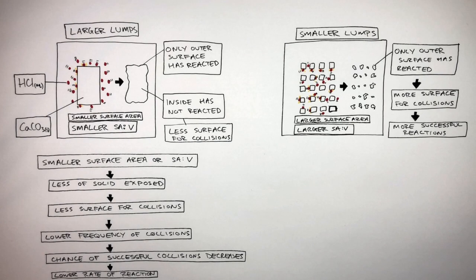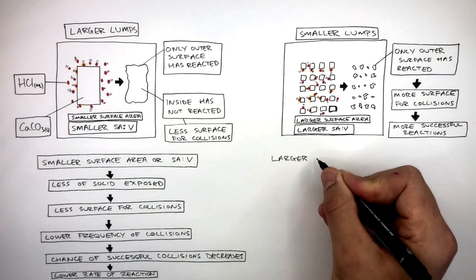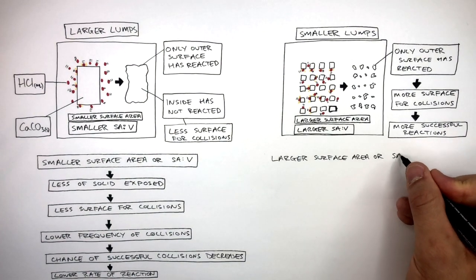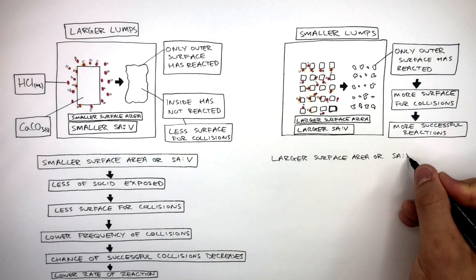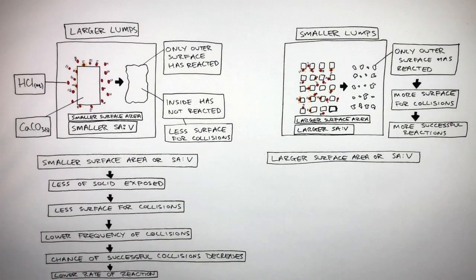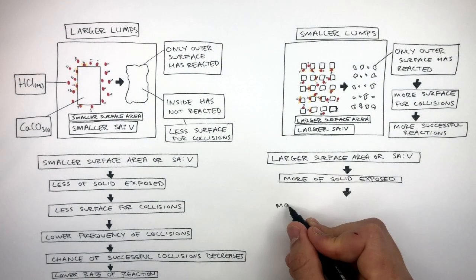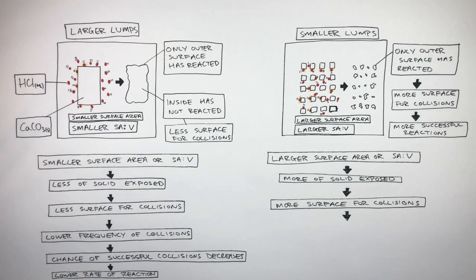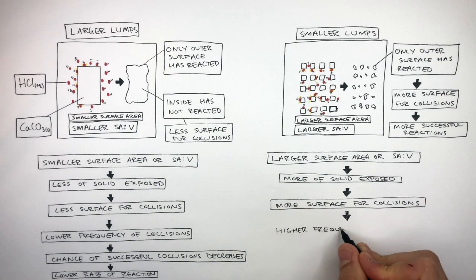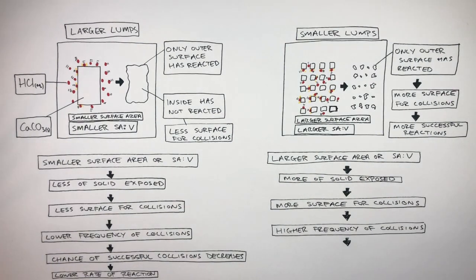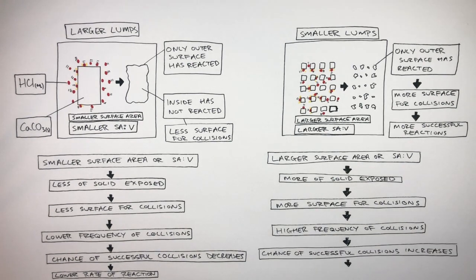The smaller lumps have a larger surface area, or surface area to volume ratio. This means more solid is exposed, so there is more surface for collisions. Therefore, there is a higher frequency of collisions, so the chance of successful collisions increases. So there is a higher rate of reaction.